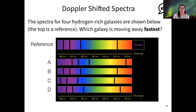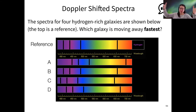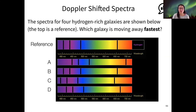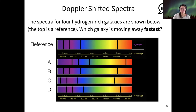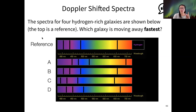Here's an example of Doppler shift. Let's say I have a reference spectrum measured in a laboratory from a hydrogen gas cloud at rest. Then I'm measuring hydrogen-rich spectra from galaxies A through D. Which galaxy is moving away from us the fastest? Most of you are answering A, some are answering C, and I want to say I understand where both answers are coming from. The correct answer is A.